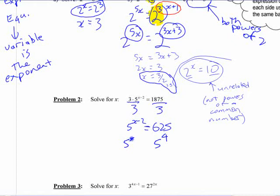625 is 5 to the 4. So we got 5 to the x minus 2 is 5 to the 4, which means x minus 2 has to be 4, which means x has to be 6.